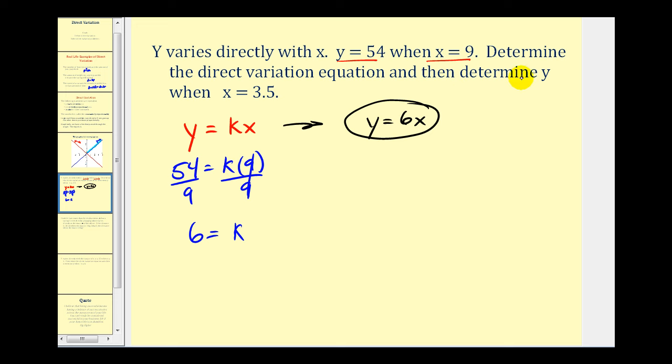And the second part is determine Y when X equals 3.5. So by performing substitution again, we can find Y. Y is equal to six times 3.5. So when X is 3.5, Y is equal to 21. Let's take a look at another example.